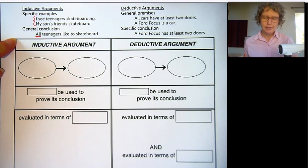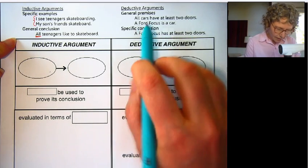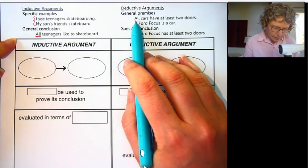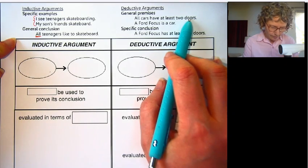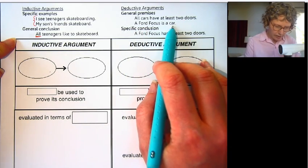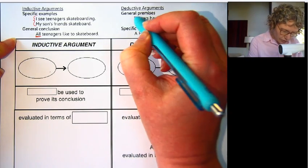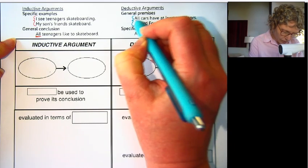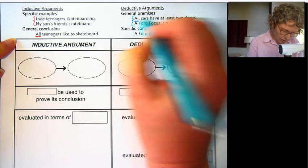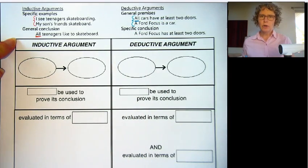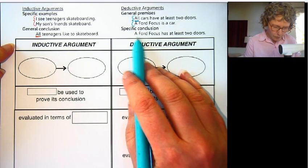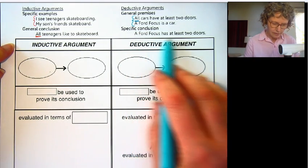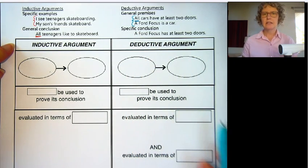Let's contrast this with a deductive argument. All cars have at least two doors. A Ford Focus is a car. So these are general premises. Going to a specific conclusion: a Ford Focus has at least two doors.